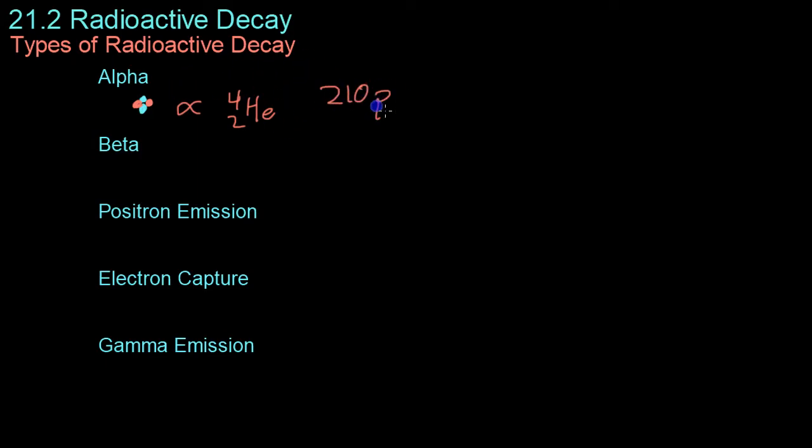So if we were to do an example of alpha decay, we would take something like polonium-210 and decay it using the alpha particle. 210 minus 4 is 206, 84 minus 2 is 82. And the element number 82 is lead. So polonium decays into an alpha particle and lead-206.